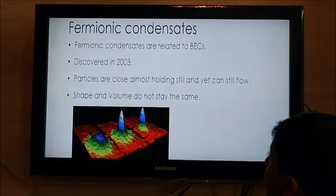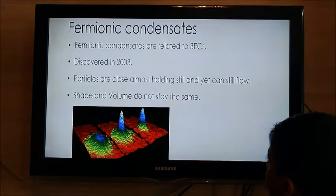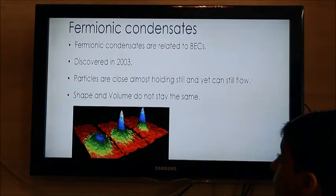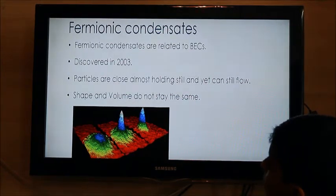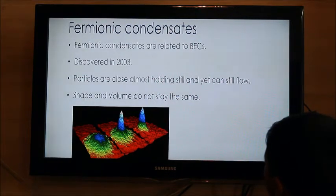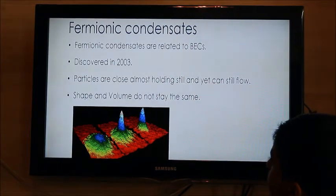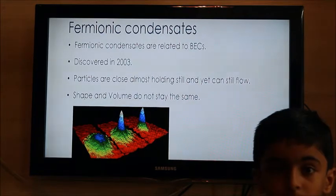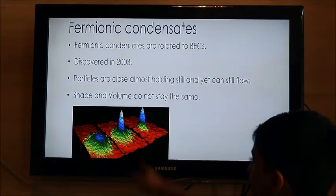Fermionic condensates. Fermionic condensates are related to BECs. Discovered in 2003, particles are close almost holding still and gas can still flow, shape and volume do not stay the same. This is the type of it.